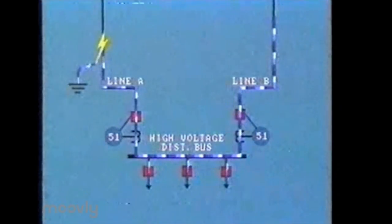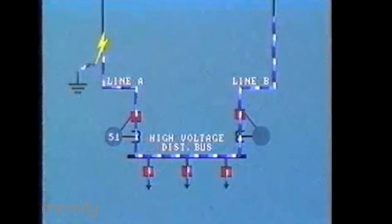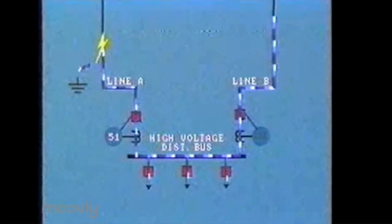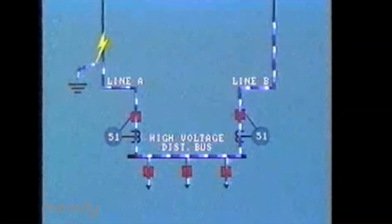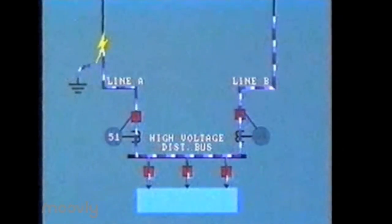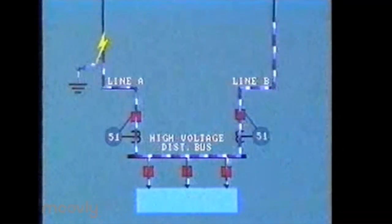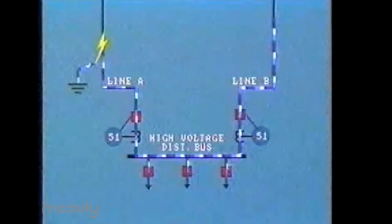This overcurrent causes both relays to try to shut down the whole system, which leaves the bus bar with no power to distribute to the customers.